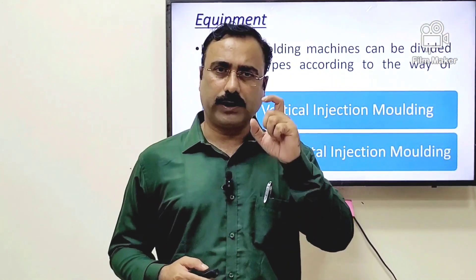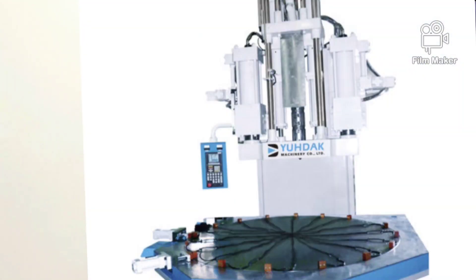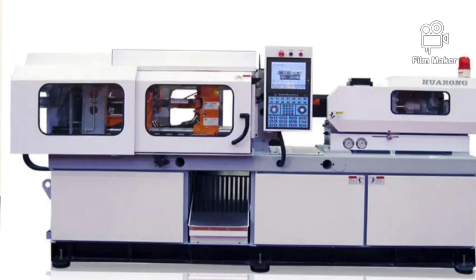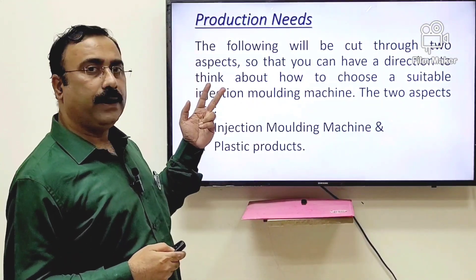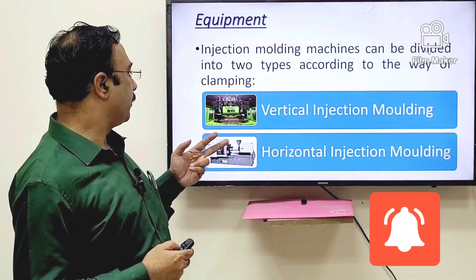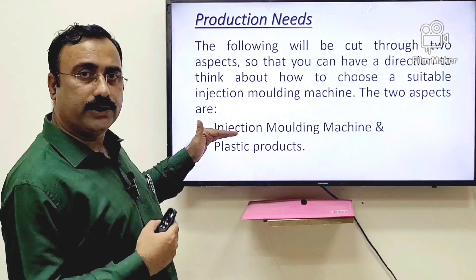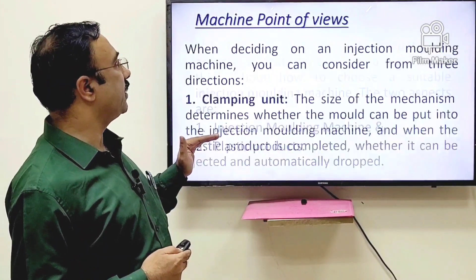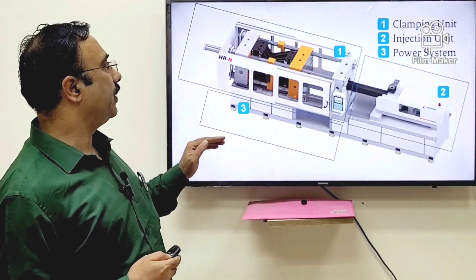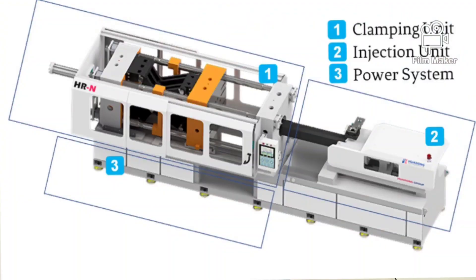There are two types of injection molding machines: the first is vertical and the second is horizontal. Horizontal machines are mostly in use, but vertical machines are also used in some processes. When thinking about machine selection, you need to consider two things: the machine itself and the plastic product. On the machine side, there are three things to understand: the first is the clamping unit, the second is the injection unit, and the third is the power system.